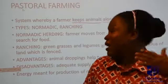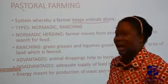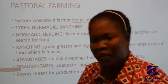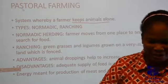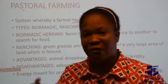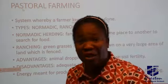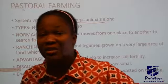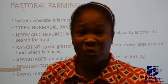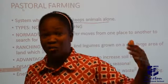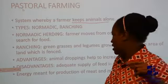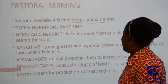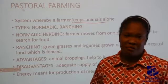In ranching, the animals are stationary — you fence the animals in and provide them with feed. You don't move them around. In nomadic herding, some farmers move from one country to another or one state to another. Now let's look at the advantages of pastoral farming: animal droppings help to increase soil fertility, whether for ranching or nomadic — the droppings will help increase the fertility of the soil.